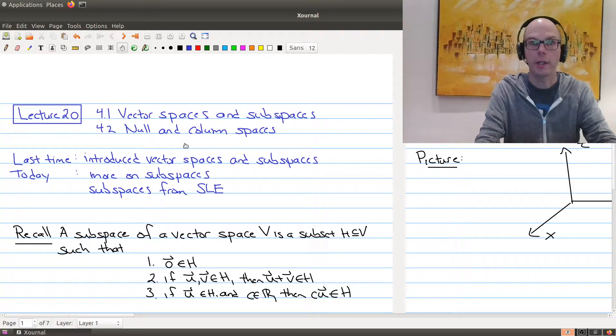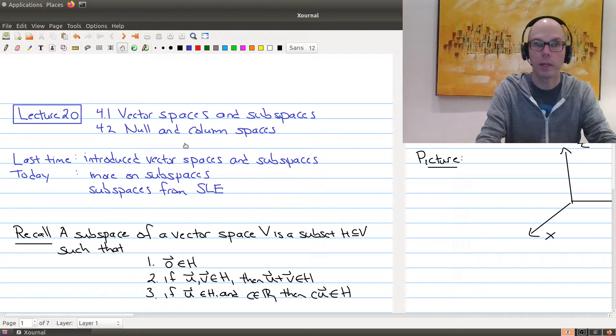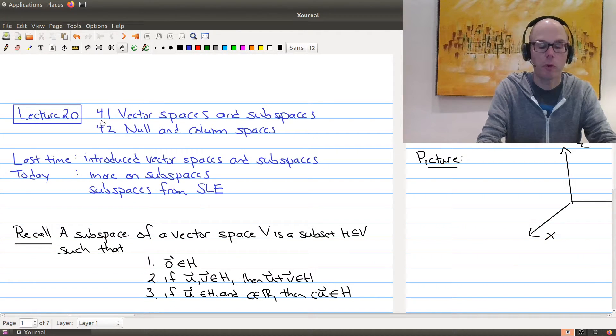Hello and welcome to lecture 20 of Math 1B03. In today's lecture we're going to be looking at 4.1 and 4.2. In particular we'll be finishing up section 4.1 of the textbook on vector spaces and subspaces, and then we'll start on section 4.2 which will be talking about subspaces that you can get from a matrix.